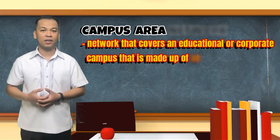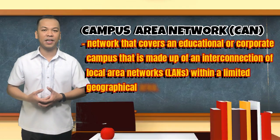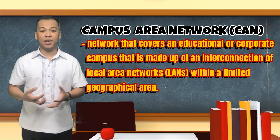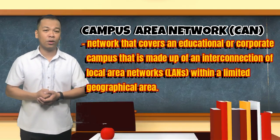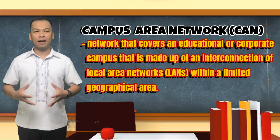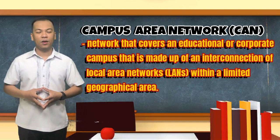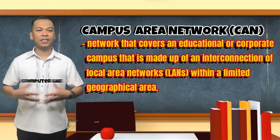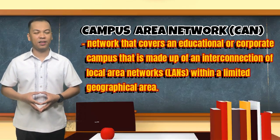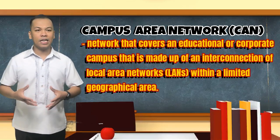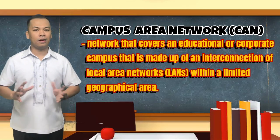A campus area network, also known as controller area network or corporate area network, is a network that covers an educational or corporate campus, made up of an interconnection of local area networks within a limited geographical area. An example of campus area network is our school — when the admin office, registrar's office, library, or even computer laboratory are interconnected. The networking equipment such as routers, switches, and even the transmission media are entirely owned by the school.